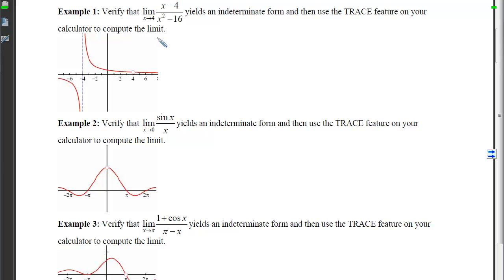Looking at this first one, to verify that we have an indeterminate form means we're going to plug this x value that we're getting close to into the function and see what happens. If I plug 4 in on top, I get 0, and if I plug 4 in on the bottom, I also get 0. Notice that this is an indeterminate form from that list we had above.